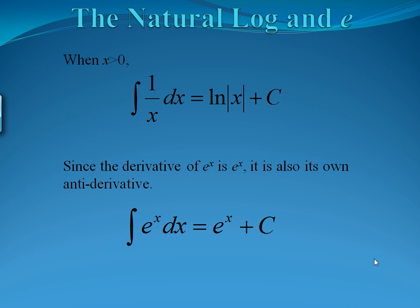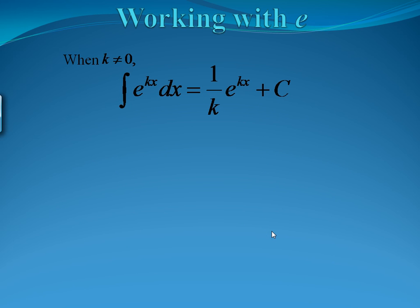What about natural log and e? Notice that 1 over x is the case of x to the n where n equals negative 1 — our special case. The derivative of natural log was 1 over x, so naturally when you integrate 1 over x, you get the natural log of x back plus a constant. Note that the natural log of x is only defined for positive values, so we get absolute value symbols when we integrate. Similarly, the derivative of e to the x is e to the x, so when we integrate e to the x we get the same thing back plus a constant. If we have e to some constant k times x, the antiderivative will be 1 over k times e to the kx plus c.